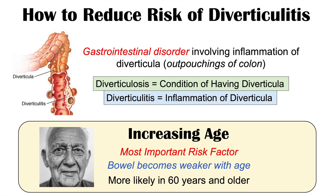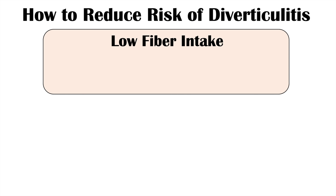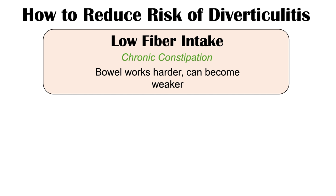The rest of the risk factors we can change, so they are very important. The first modifiable risk factor for diverticulitis is low fiber intake. This can lead to chronic constipation. If there's not enough fiber consumed in your diet, your large intestine has to push harder on constipated stool. The increased pushing and pressure can lead to weakening of the large intestine wall, causing these outpouches — diverticula — to form.